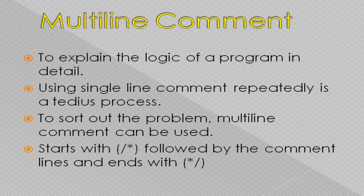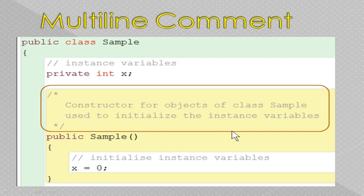To sort out the problem, multi-line comment can be used. You can start with slash asterisk at the beginning, followed by the comment lines, and end it with asterisk and slash. Whatever statements are in between will be disabled and become comment lines. You can see an example: a slash asterisk here, two lines in between, and then it ends with asterisk slash. So these two lines are disabled and the compiler cannot execute them. This is how you can use multi-line comment.